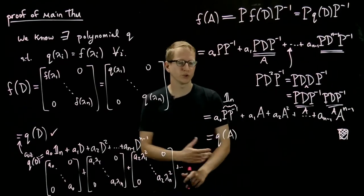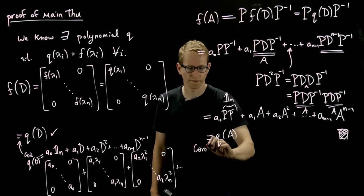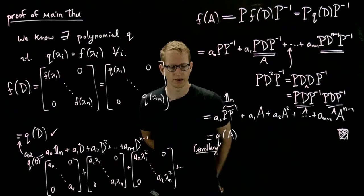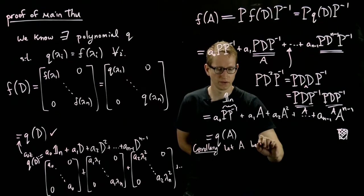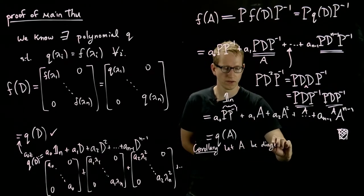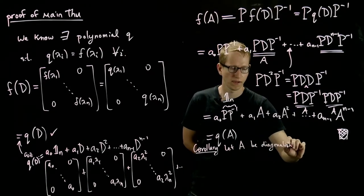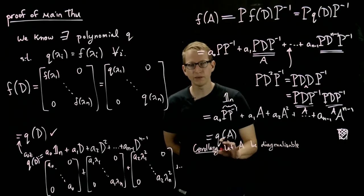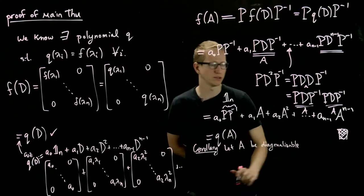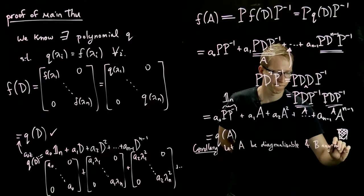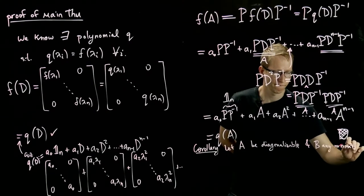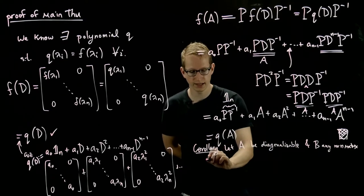So this has an interesting corollary. So let A be diagonalizable and let B be any square matrix of the same size.